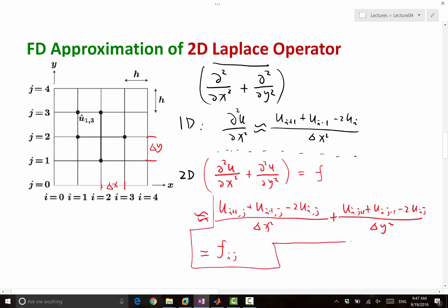So this equation, which is written out as a linear combination of five different values of u at five grid points, is equal to f, i, j.